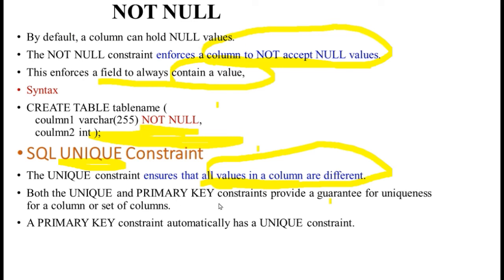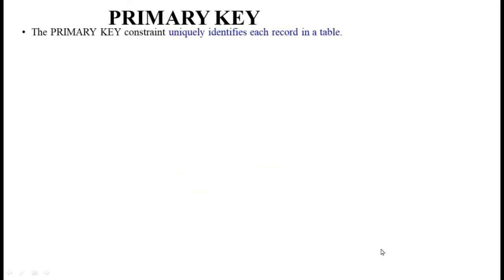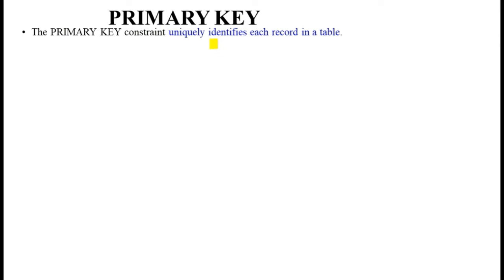The difference between UNIQUE and PRIMARY KEY: by default, a PRIMARY KEY constraint also enforces uniqueness. What is a primary key? A primary key is a key that uniquely identifies each record within a database table. There must be an attribute that uniquely identifies every record. A primary key must not be null.